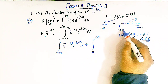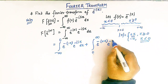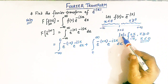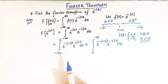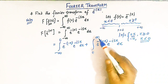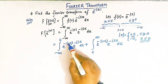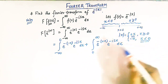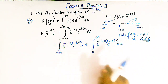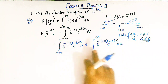So when we go from zero to infinity, we have e raised to negative of positive x times e raised to negative i s x dx. The mod function allows us to split this integral as the sum of two integrals: one from negative infinity to zero where mod of x equals negative x, and one from zero to infinity where mod of x equals positive x. Now let us simplify the integrands so we can easily solve these two integrals.